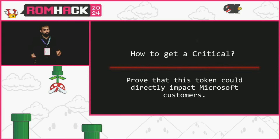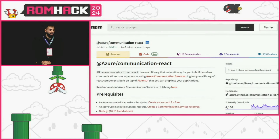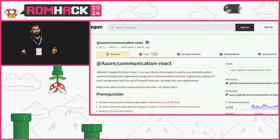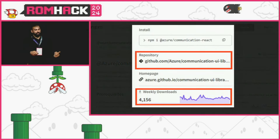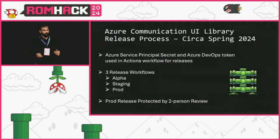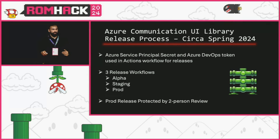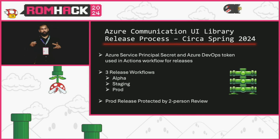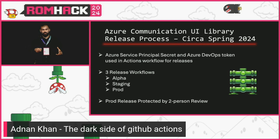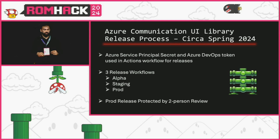What convinced them was simply showing what I could do. One of the repositories the user had access to was Azure Communication UI Library — it had a decent number of NPM downloads because it pushed an NPM package, so I knew this would be direct customer impact. Looking at its release process, they had a long-lived Azure DevOps token and an Azure service principal secret — essentially like an access key that gives long-lived access until revoked — plus stage release workflows with different protection levels.